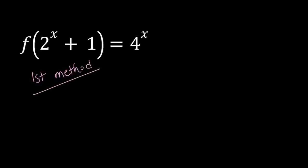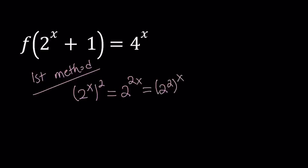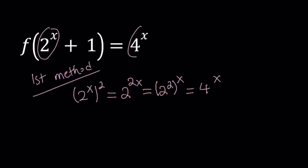For my first method, I'm going to square 2 to the power x. Using the rules of exponents, we multiply x and 2, which gives 2 to the power 2x. That can also be written as 2 to the power 2 to the power x, which equals 4 to the power x. So when I square 2 to the power x, I get 4 to the power x — and notice that we have both of them in our original expression. That's the motivation behind this method.